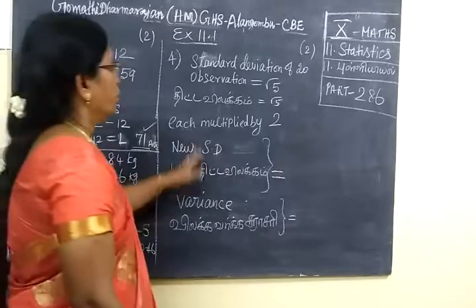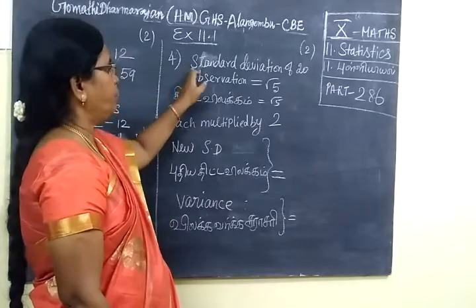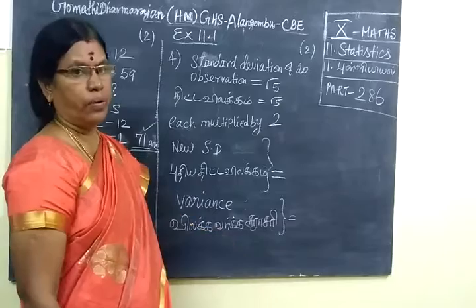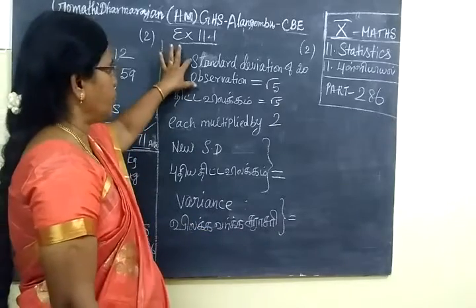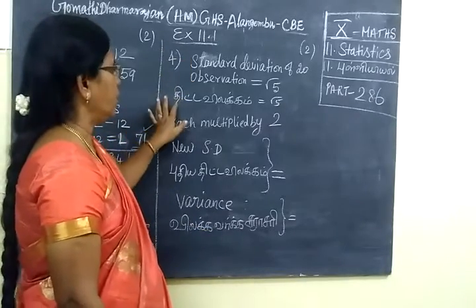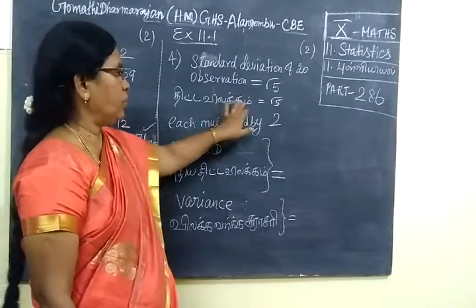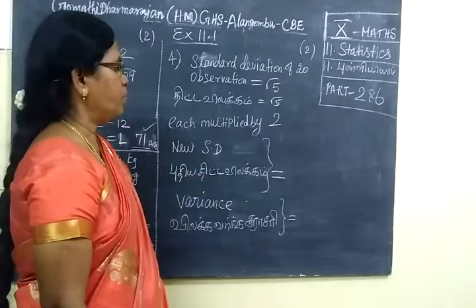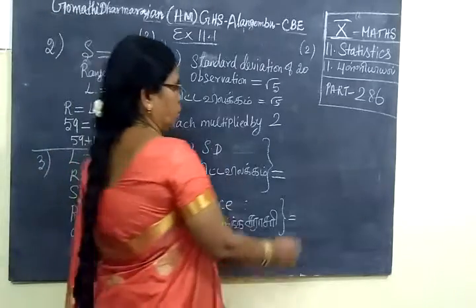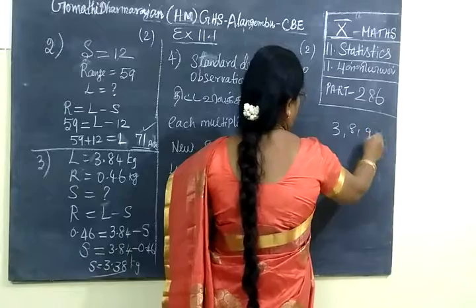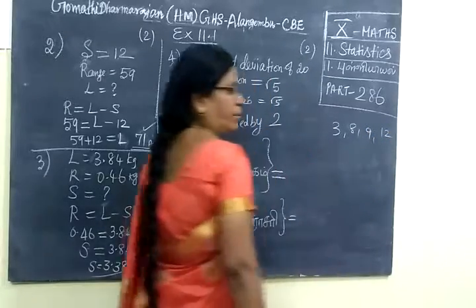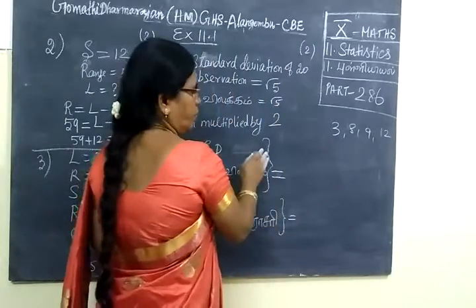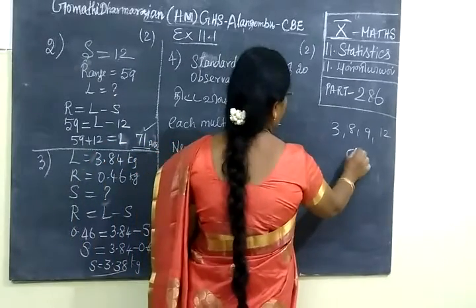Next it is a new formula. The standard deviation of 20 observations is root 5. Each observation is multiplied by 2. Suppose if you have 3, 8, 9 — now examples are either way. It is a new formula. Standard deviation will come as root 5.